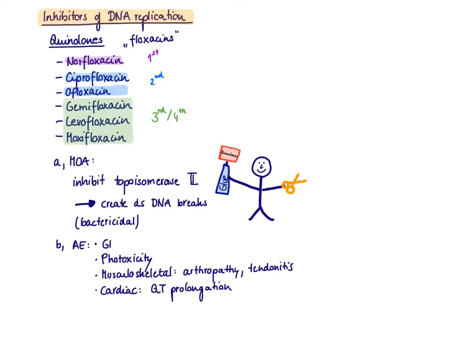The quinolones are also sometimes referred to as the fluoroquinolones because they all end with floxacin. I've listed here the commonly available floxacins: norfloxacin, ciprofloxacin, ofloxacin, gemifloxacin, levofloxacin, and moxifloxacin. They can also be categorized by generation, which helps to understand their spectrum of activity.